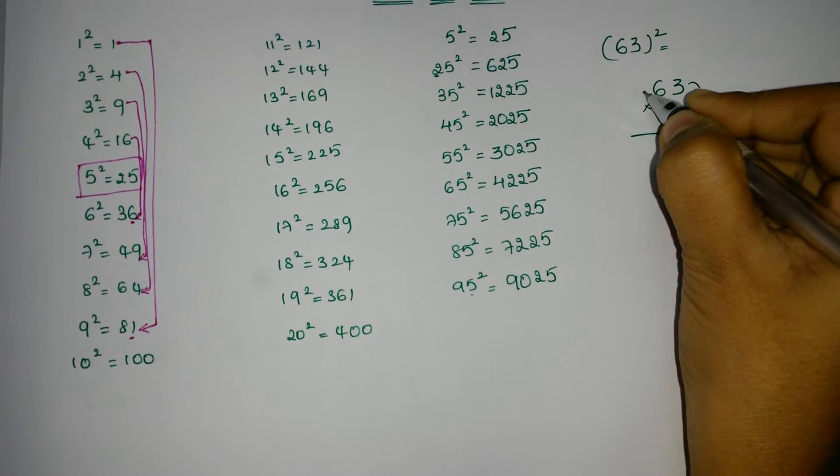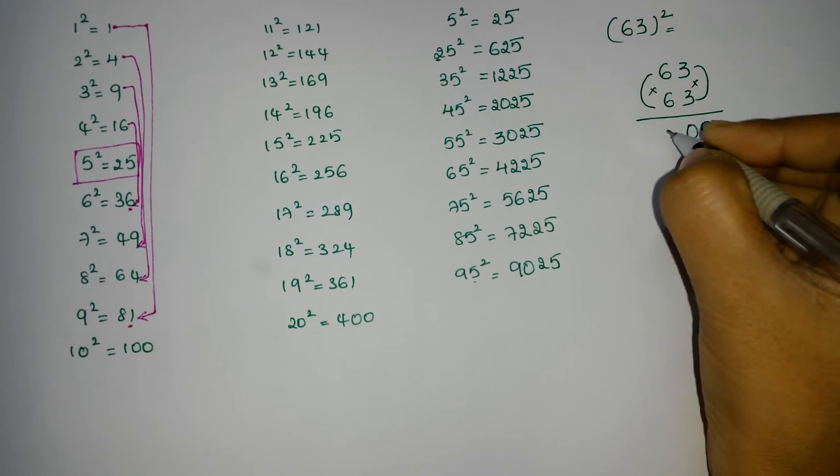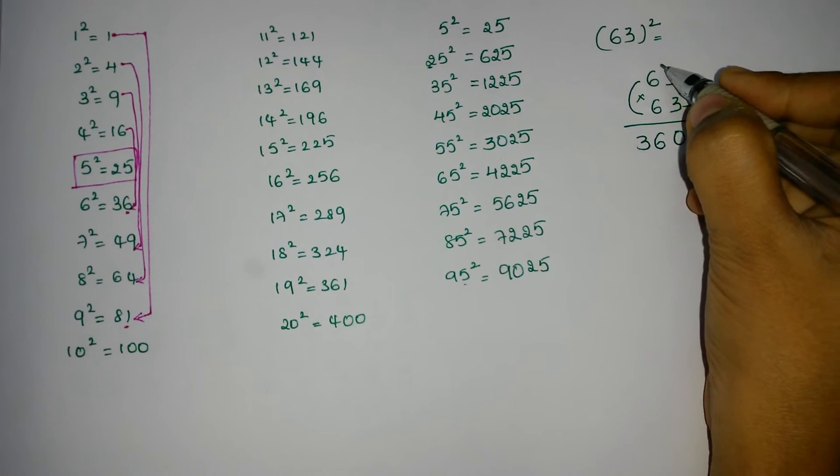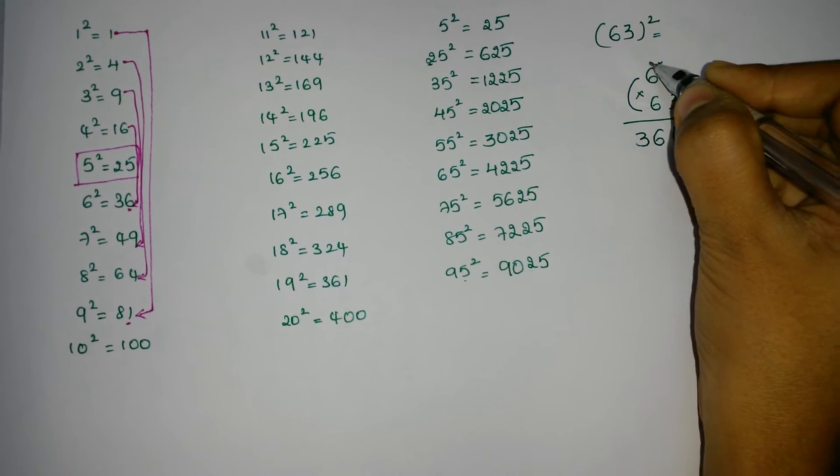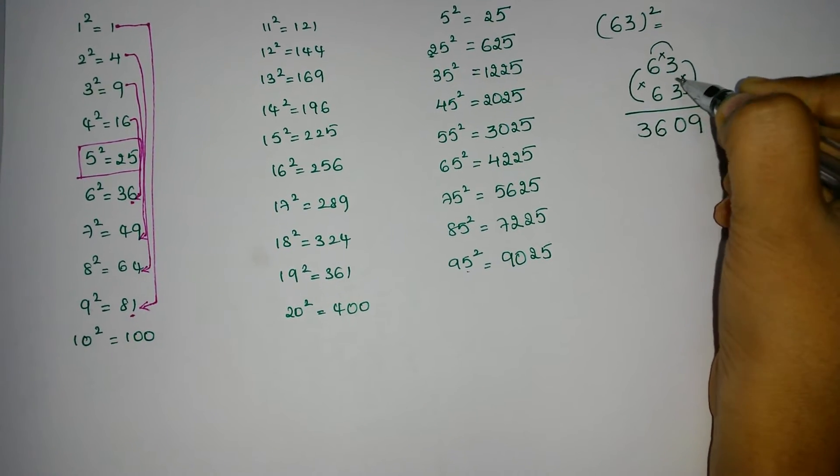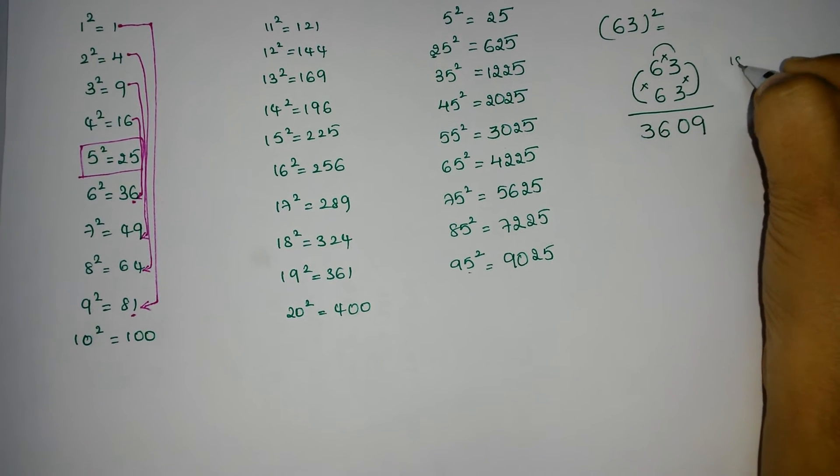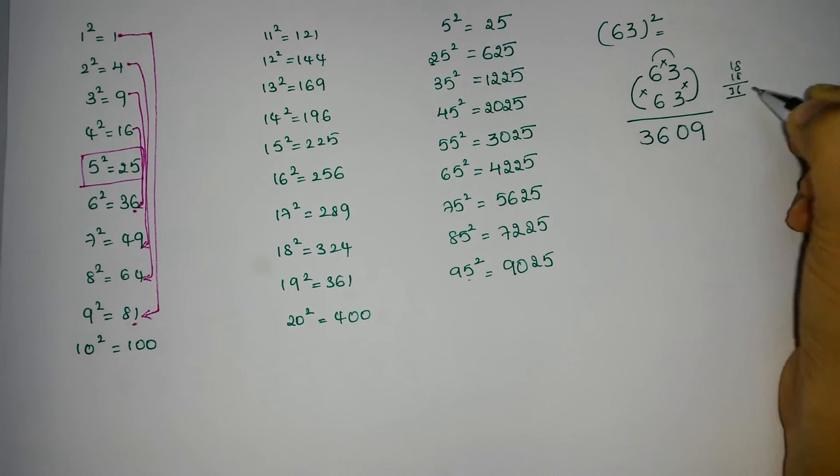Now multiply these two terms. That means 6 into 6 is 36. Now multiply both these: 6 times 3 is 18 and twice the number, 18 plus 18, that means 36.